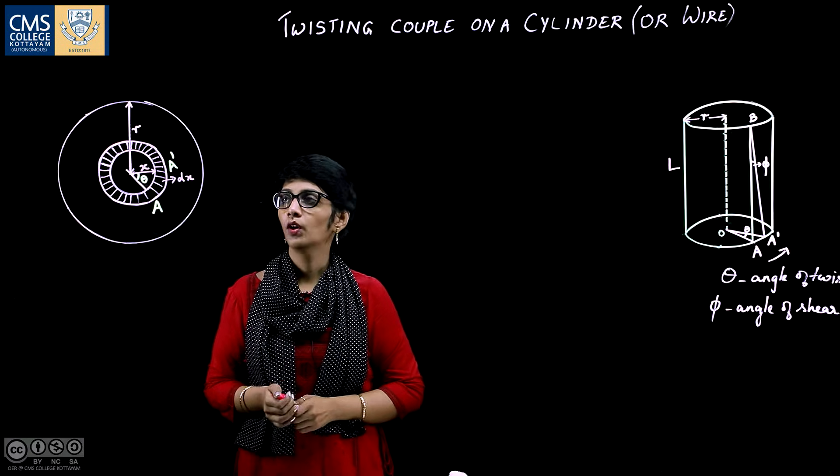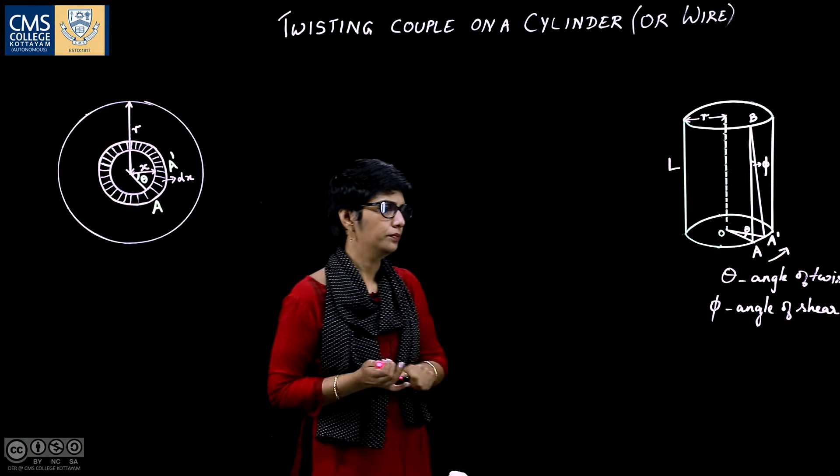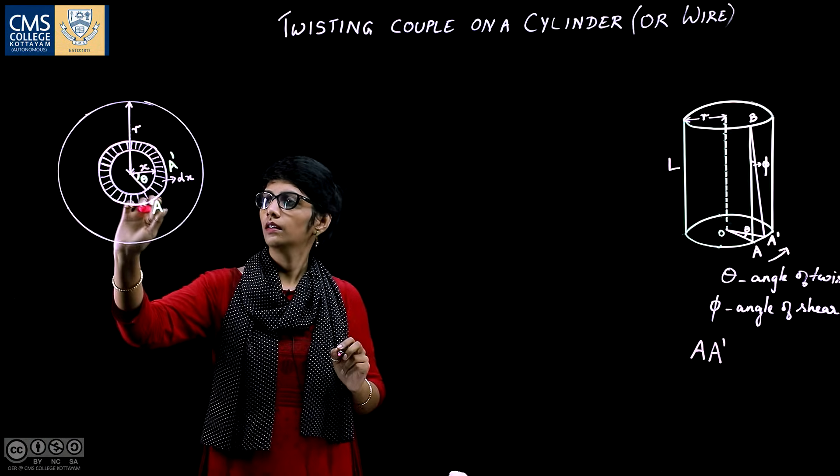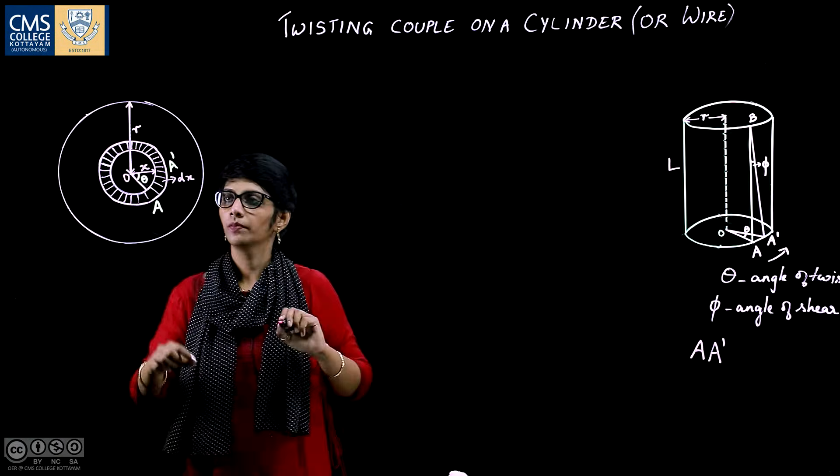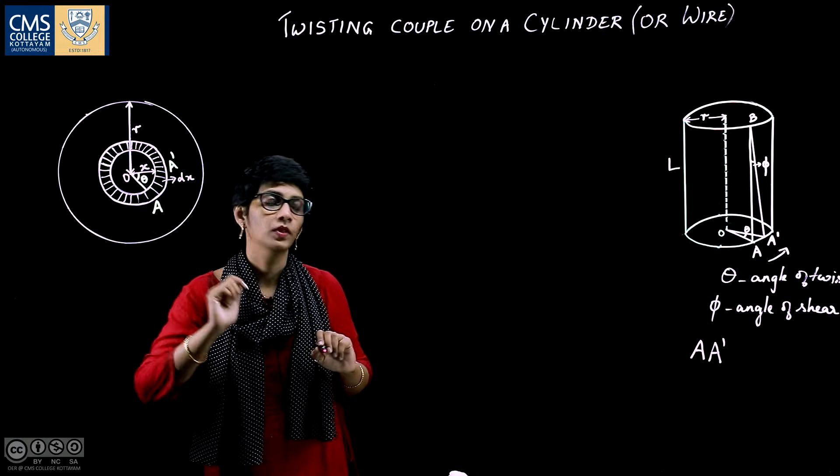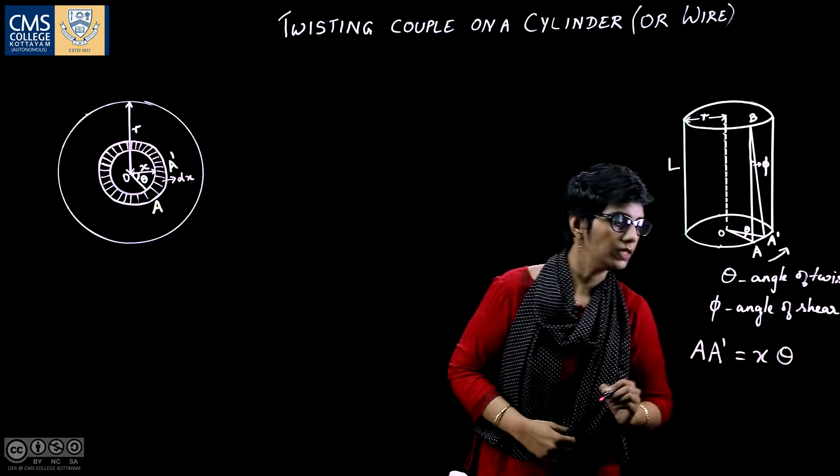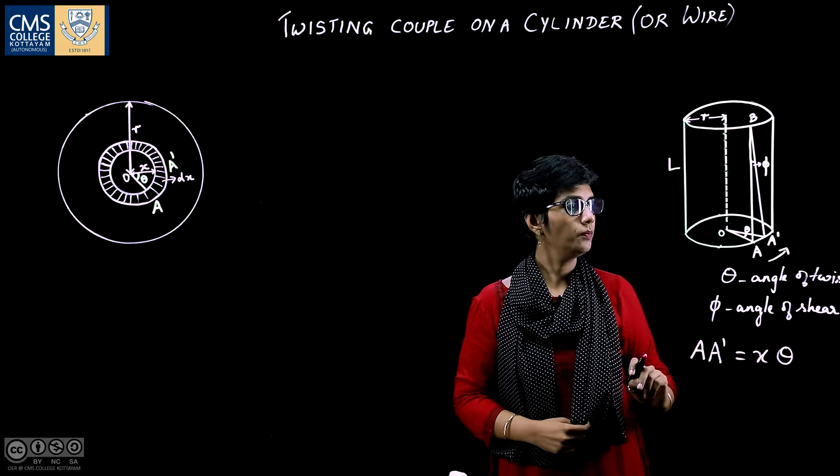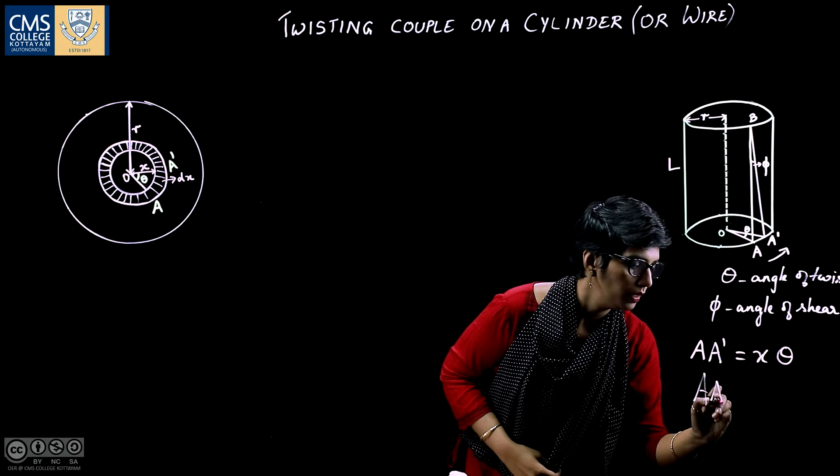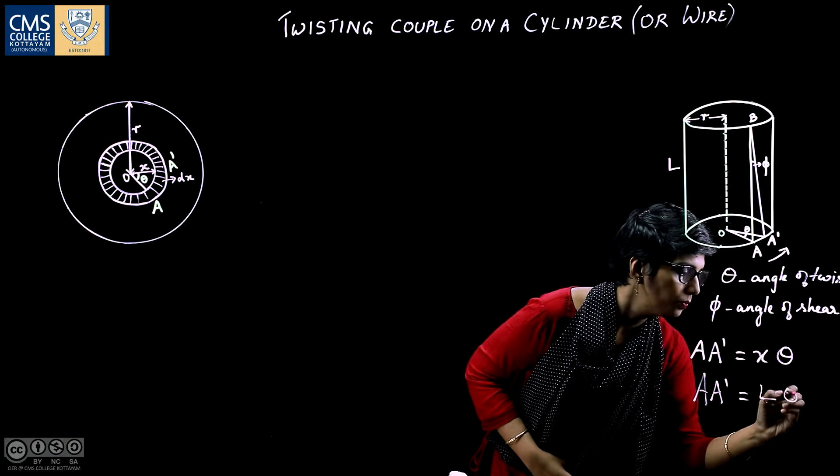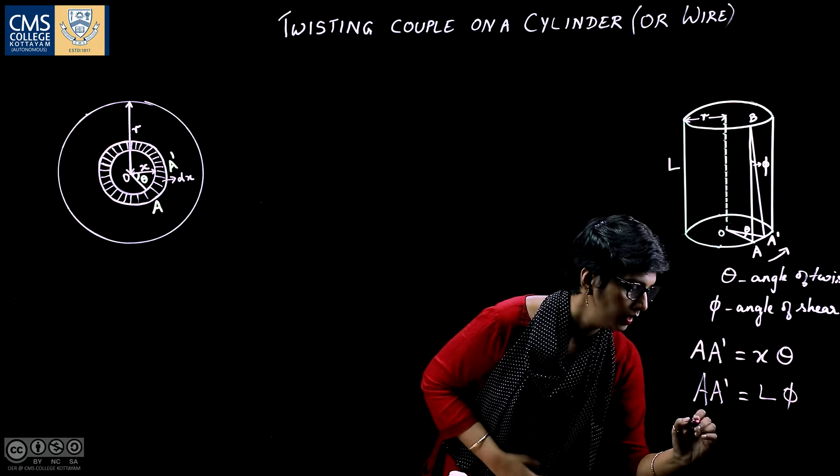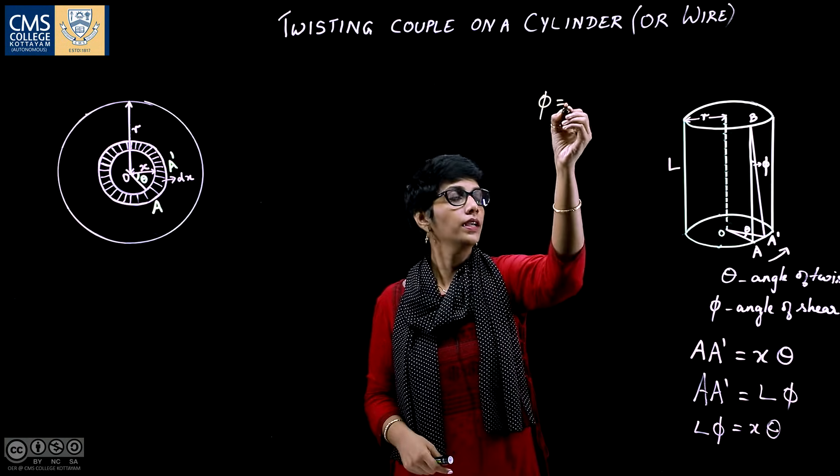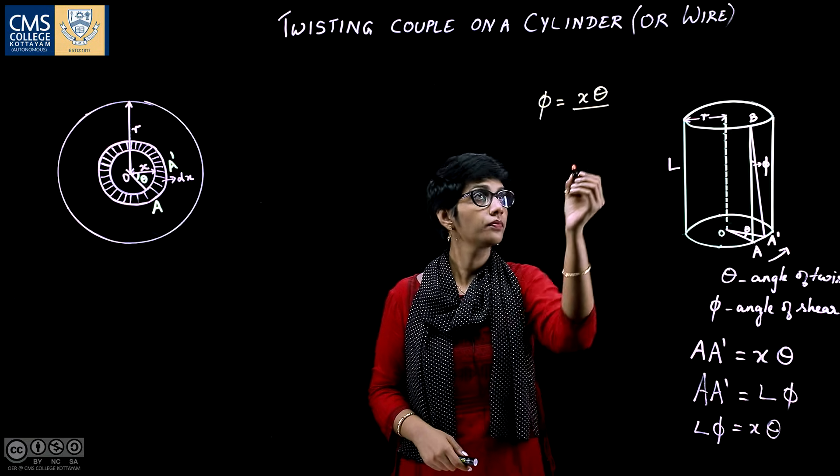From the geometry of the figure, in this triangle AOA prime, AA prime is equal to x theta. Likewise here in this triangle AABA prime, AA prime will be L phi. So L phi equals x theta. From this we can get phi equal to x theta by L.